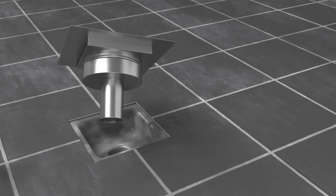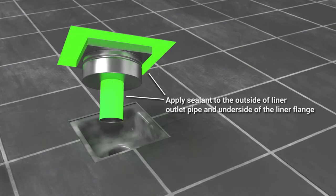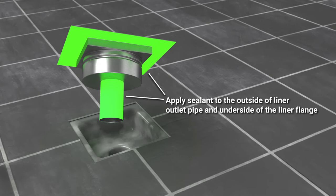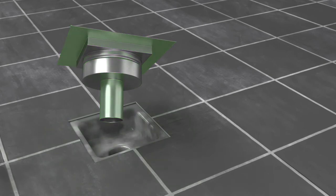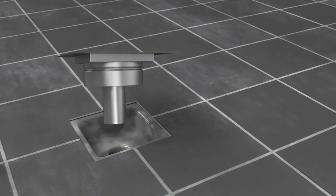Now, apply sealant to the outside of the liner outlet pipe and underside of the liner flange. Correct sealants and adhesives will vary by installation site. Careful consideration should be made for the best sealant or adhesive options to use for the stainless steel to the specific flooring surface.